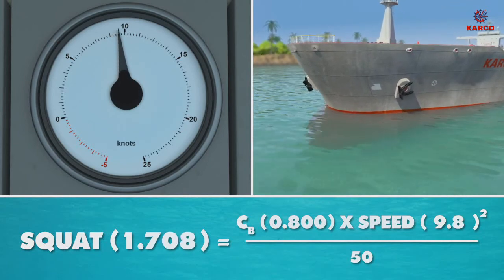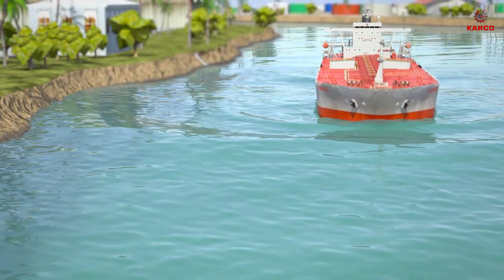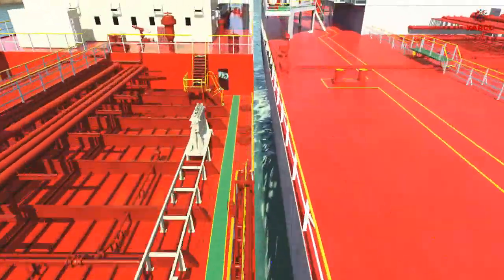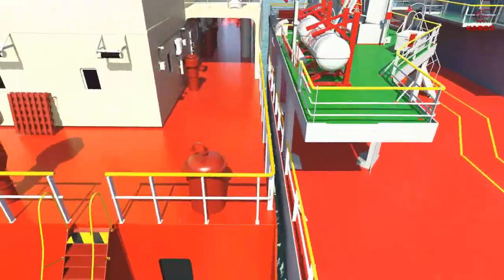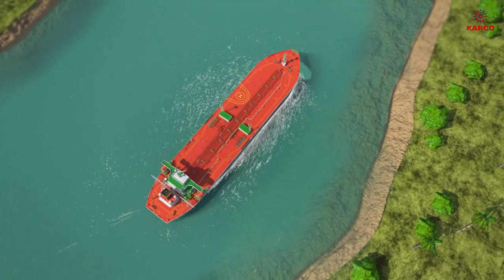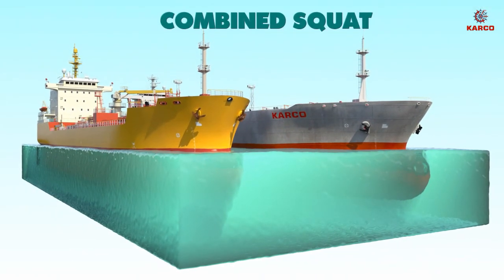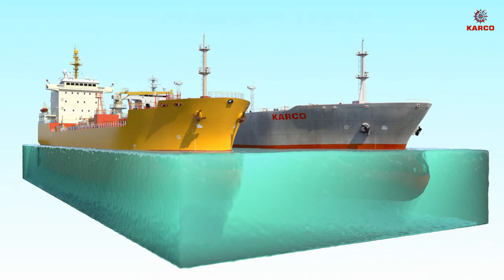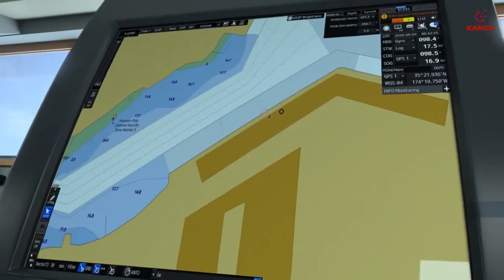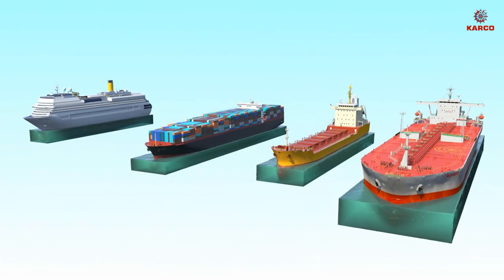Visually comprehend the effect of squat, bow cushion, bank suction and ship interaction, which has the potential of leading to serious navigation incidents. Understand the contributing factors of squat and pre-empt the situations, and learn the corrective actions where such effects will be experienced.